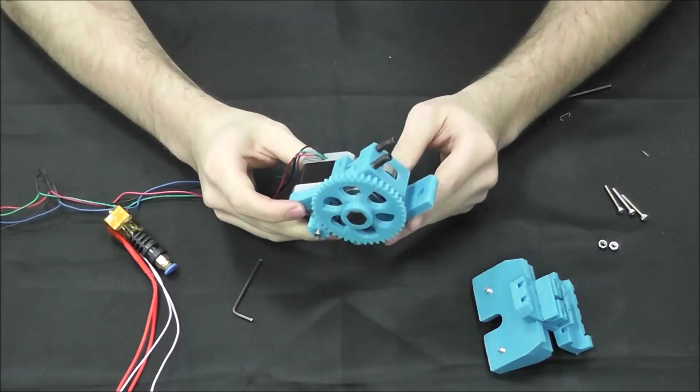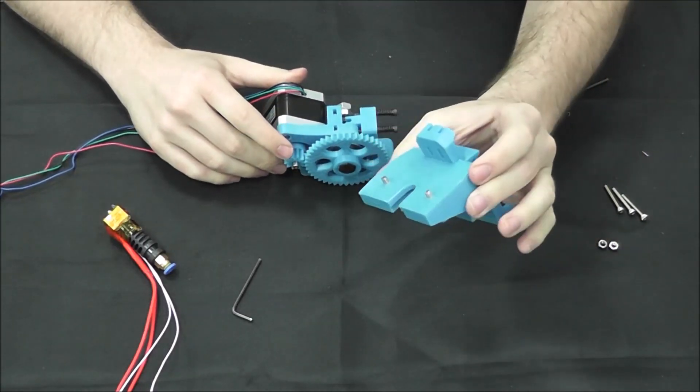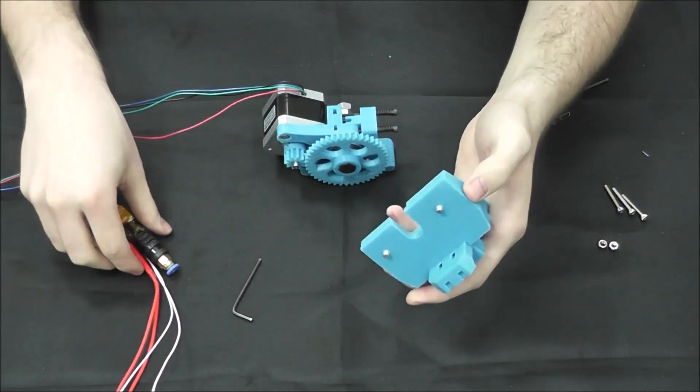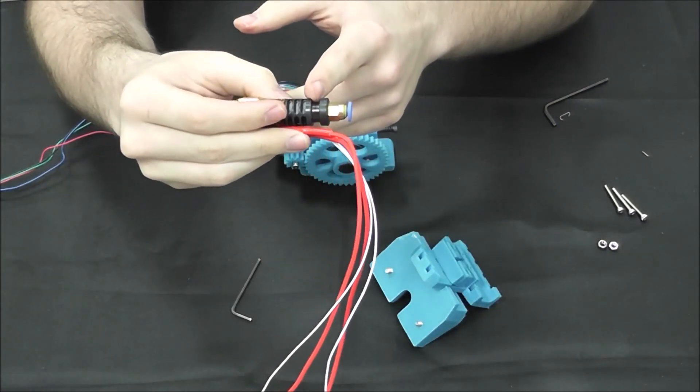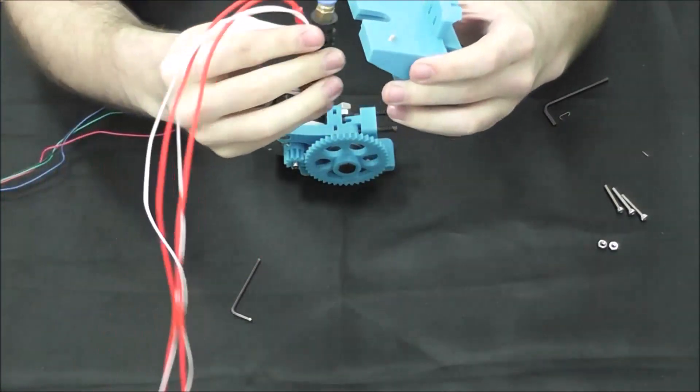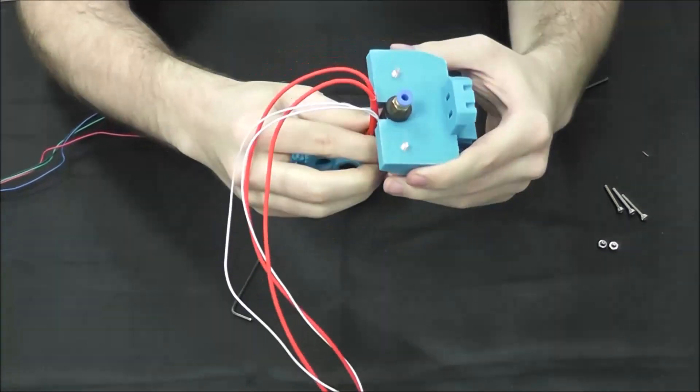So, we have our cold end made. Now, we're going to mount it to the extruder adapter and X carriage. First, you'll see a groove on the top of the hot end will slide, should perfectly, right into the extruder adapter. Go ahead and make sure it's tight in there.